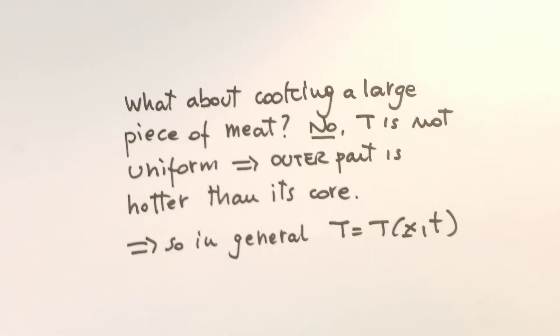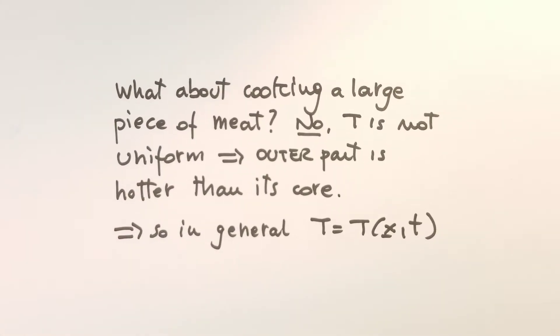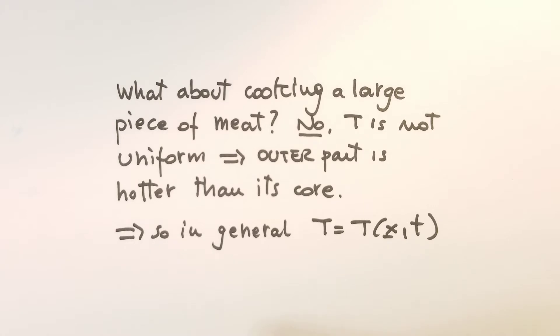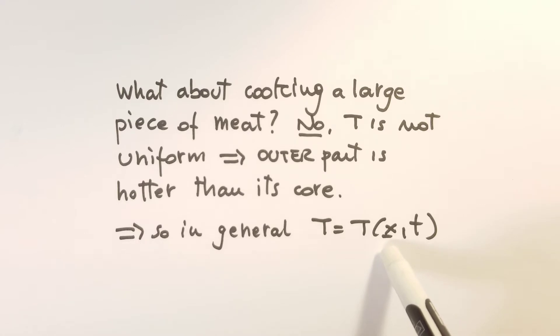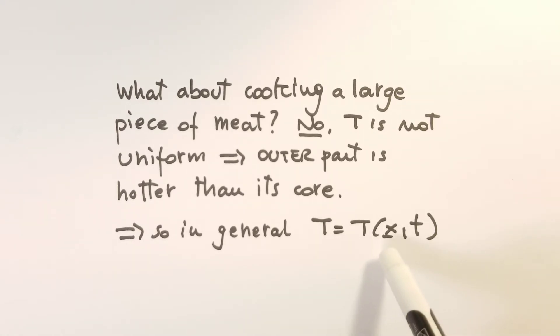Another case is if we want to cook a large piece of meat. This is also a case where the temperature is not uniform: the outer part of the meat will be hotter than its core. So these are two cases where in general the temperature depends on the spatial coordinate we choose, and also over time.